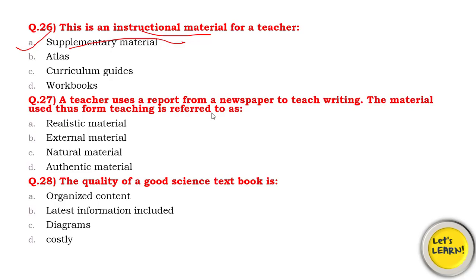Question number 27: A teacher uses a report from a newspaper to teach writing. What type of material is used? Options: realistic material, external material, natural material, or authentic material. Not all newspaper articles will be authentic. The right answer is external material.